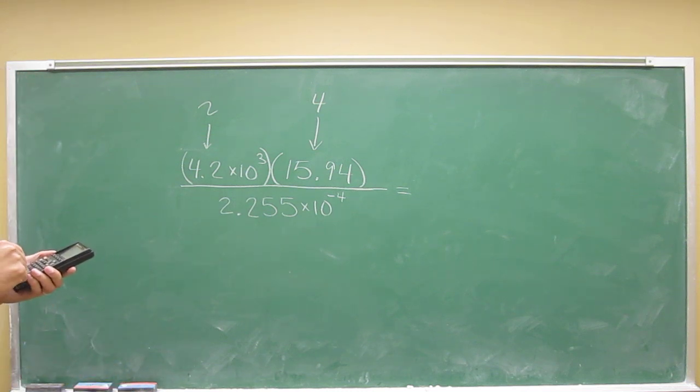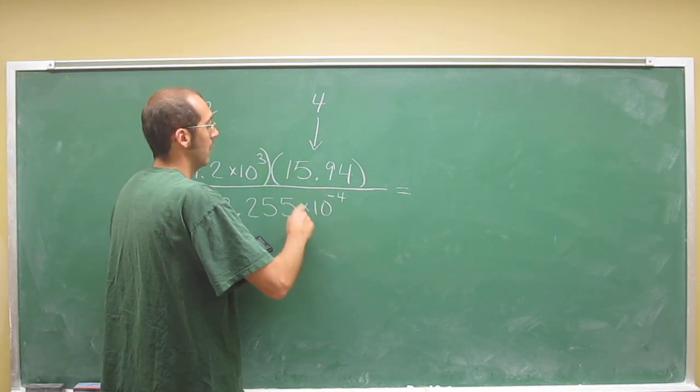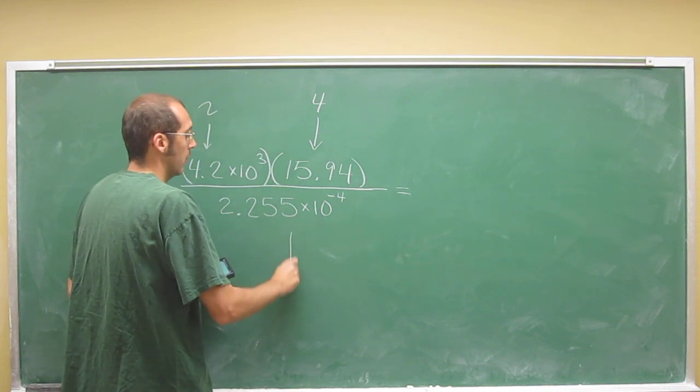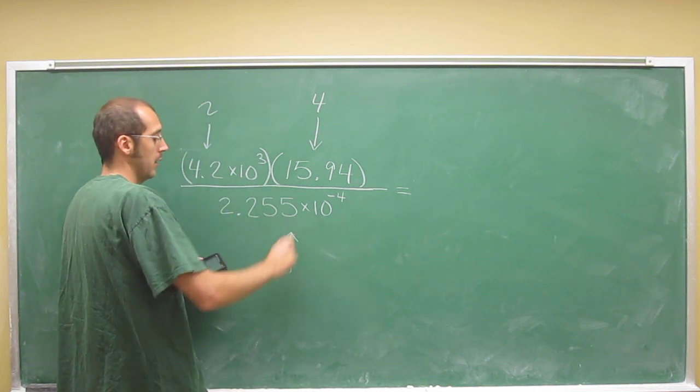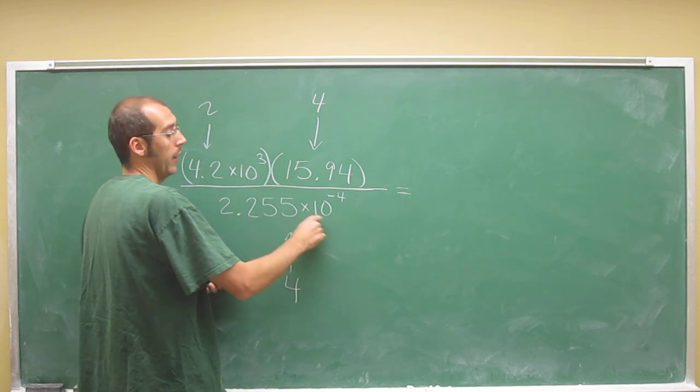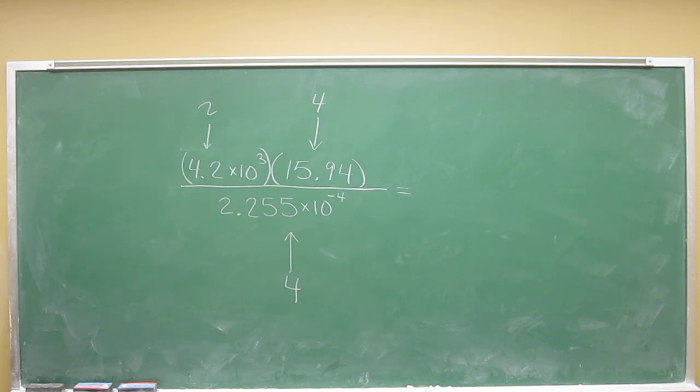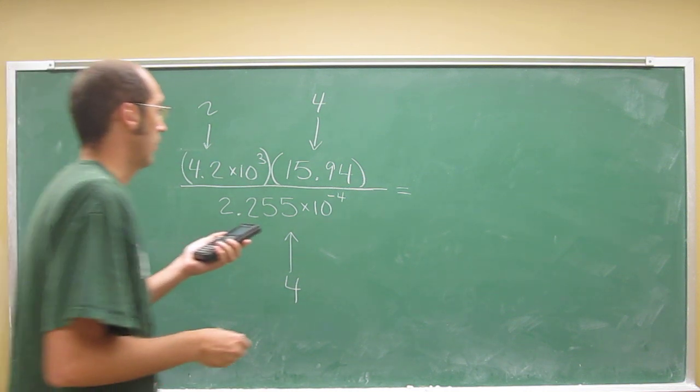And then divide that number by 2.255e negative 4. Why? Because it's in scientific notation here. So how many sig figs does this have? 1, 2, 3, 4. Because these are not considered significant. So when we divide that, we get this number.